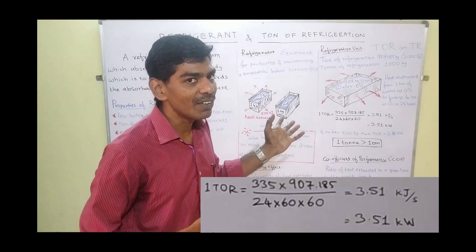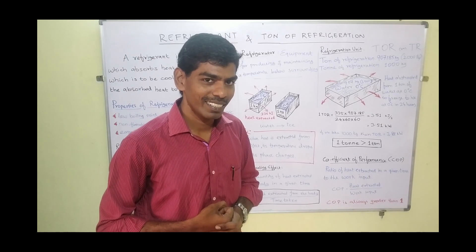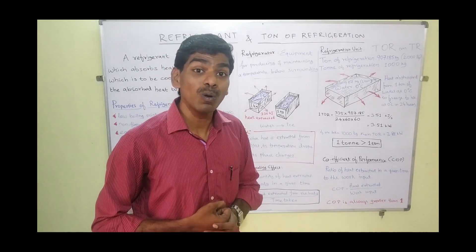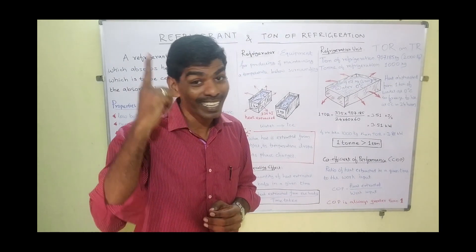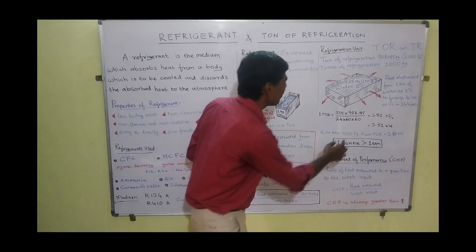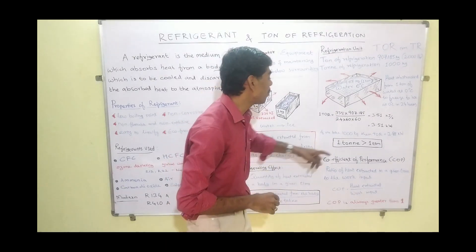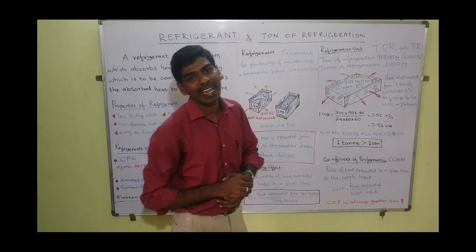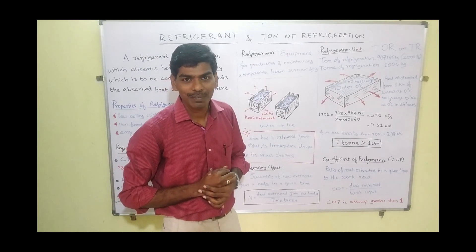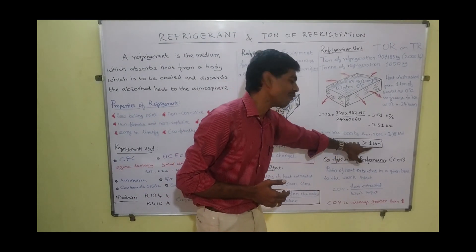If we want to calculate it for 1000 kg of water — that is 1 metric tonne (T-O-N-N-E) — the value changes. Once we replace 907.185 by 1000, we get 3.877, that is approximately 3.88 kilowatt. So what we understand is: 1 metric tonne of refrigeration is greater than 1 short ton of refrigeration.